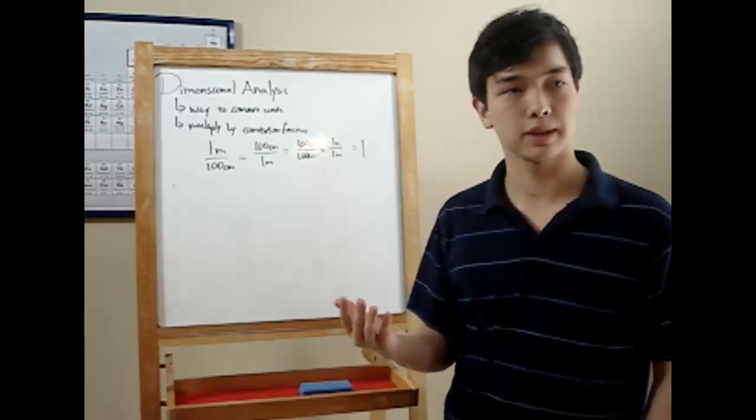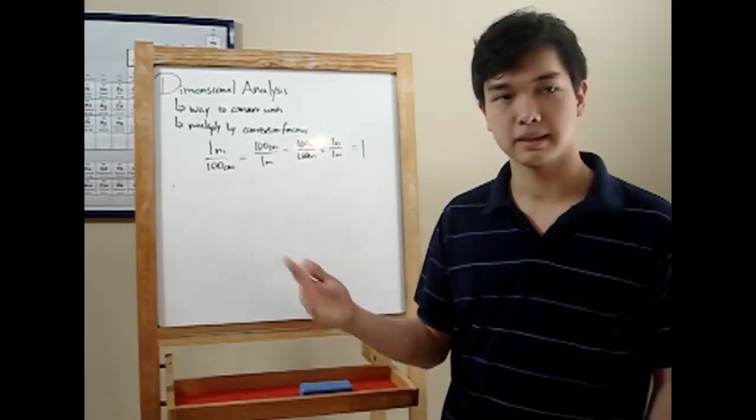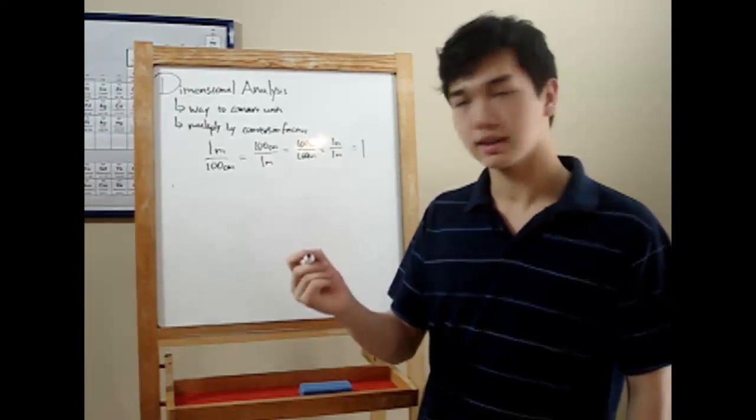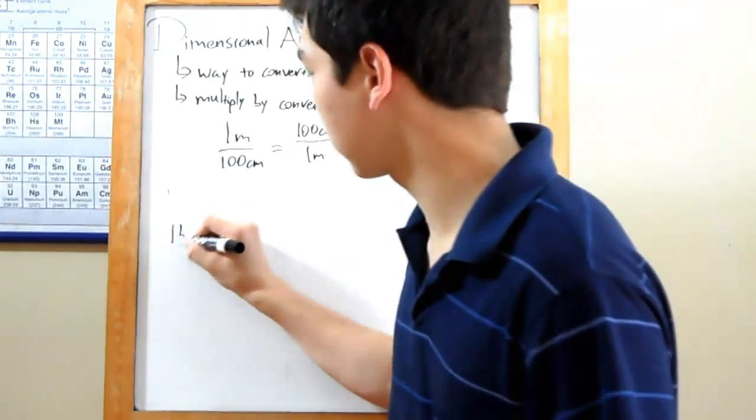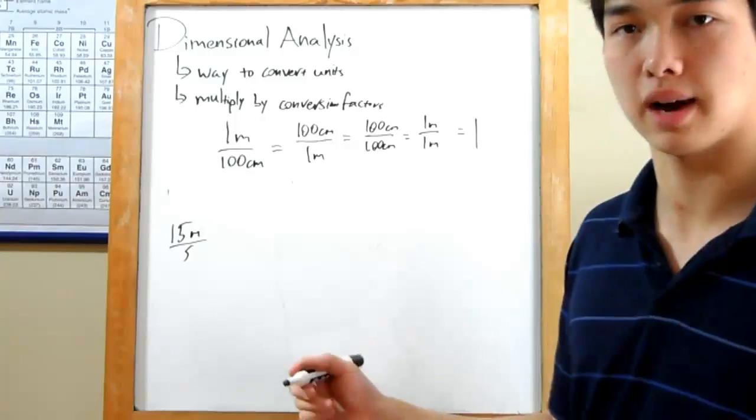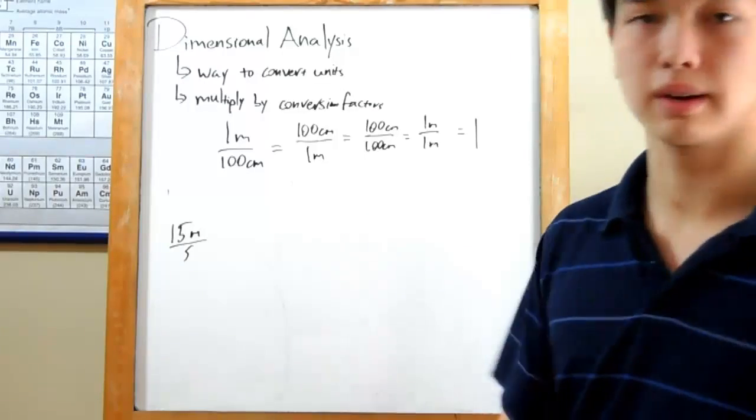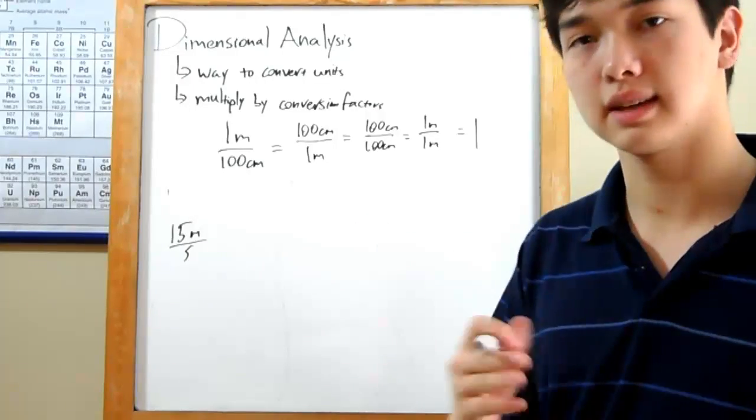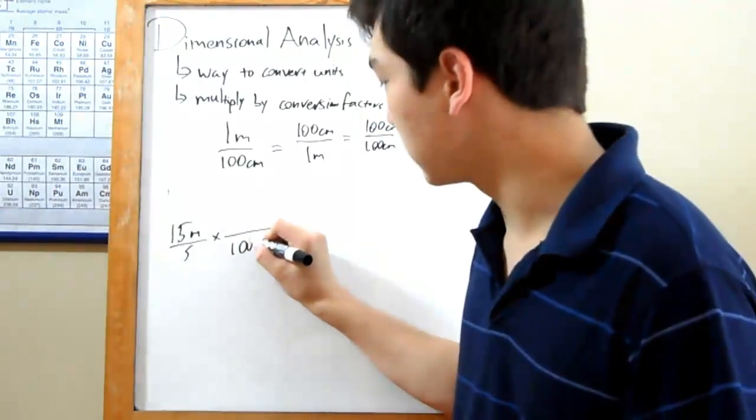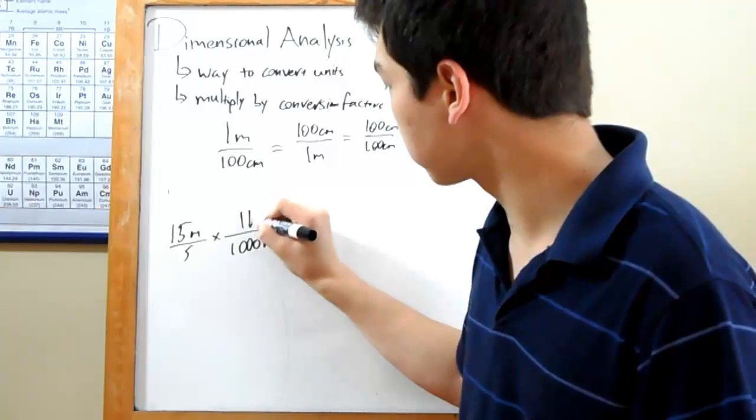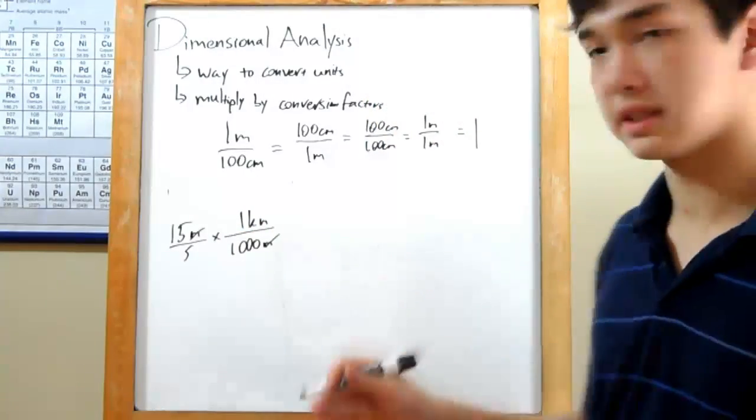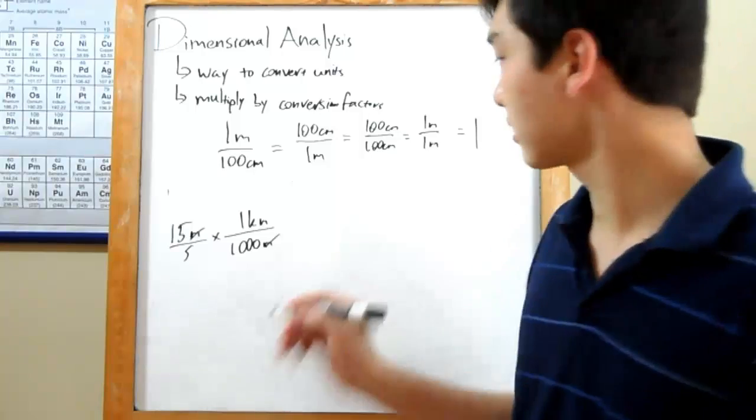So far, we've only converted one unit at a time. Meters into centimeters, CDs into minutes. Well, using dimensional analysis, you can actually do two at once. Let's say you've got a car traveling at 15 meters per second. And you wanted to know what that was in kilometers per hour. A bit more of a conventional unit. Well, convert both of these units at the same time. Start out with distance. You know that every thousand meters is the same as one kilometer. Meters will cancel out. So great. You've got kilometers on top. You're halfway there. Now you just need to convert seconds into hours.